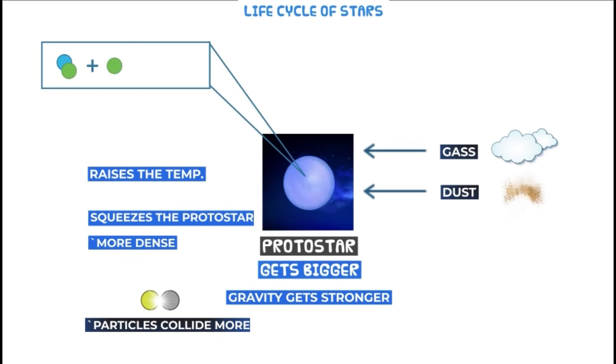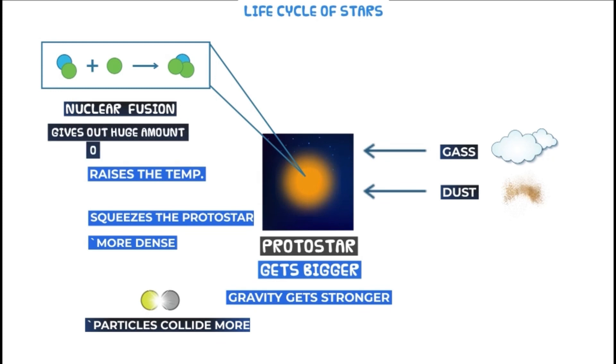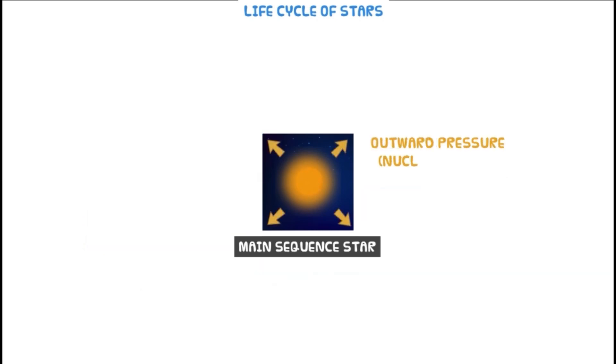As the collision and the temperature increases, it causes fusion reaction to occur which gives out huge amounts of energy and the protostar now becomes a main sequence star.